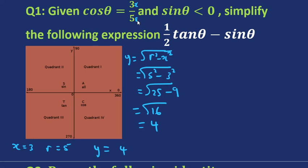Now the only thing we do not know is whether x and y are positive or negative, so we need to figure that out. We are told that sine of theta is negative. We know that sine is positive in the first two quadrants and negative in the last two quadrants. So if sine is negative, it will either be in the third quadrant or in the fourth quadrant. Because we were given a positive ratio — cosine of theta was positive — the only way that x equals 3 is positive is if theta is in the fourth quadrant. In the third quadrant we've got negative 3, so it can't be the third quadrant. So theta must be in the fourth quadrant.